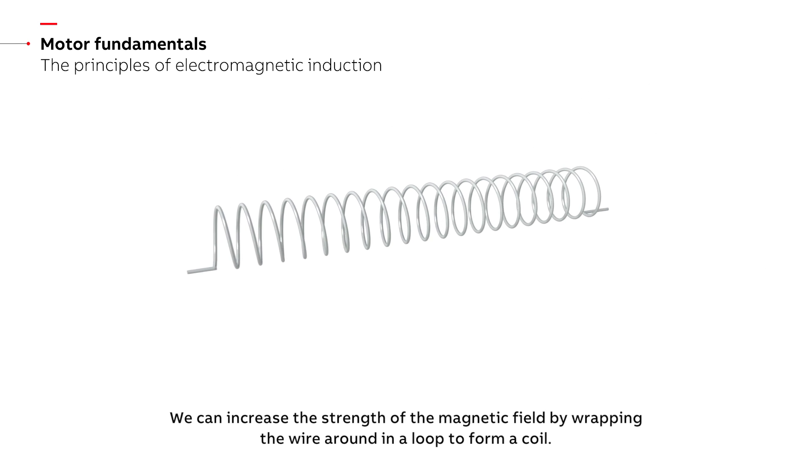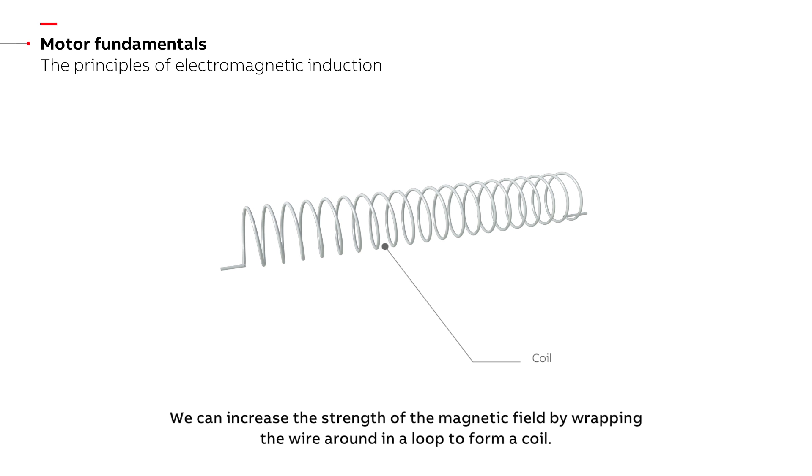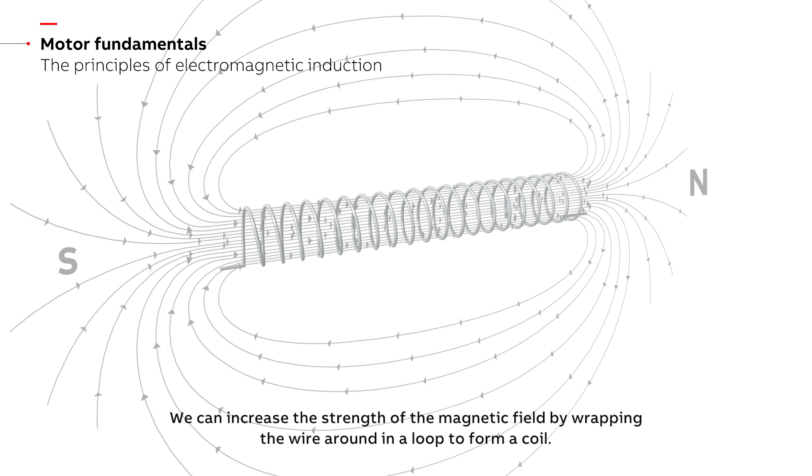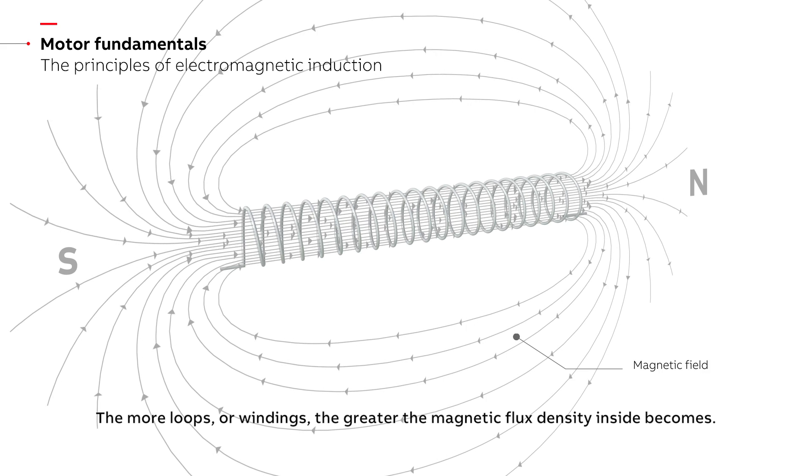We can increase the strength of the magnetic field by wrapping the wire around in a loop to form a coil. The more loops or windings, the greater the magnetic flux density inside becomes.